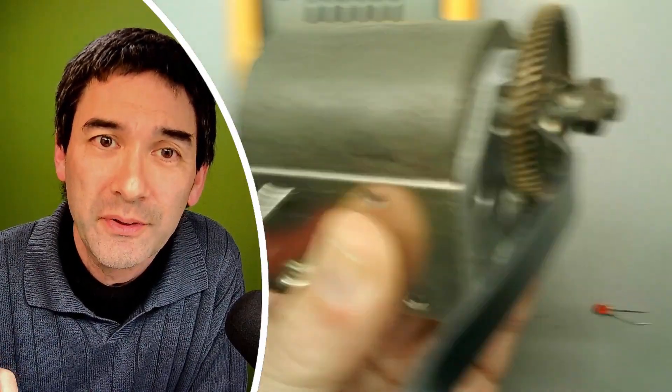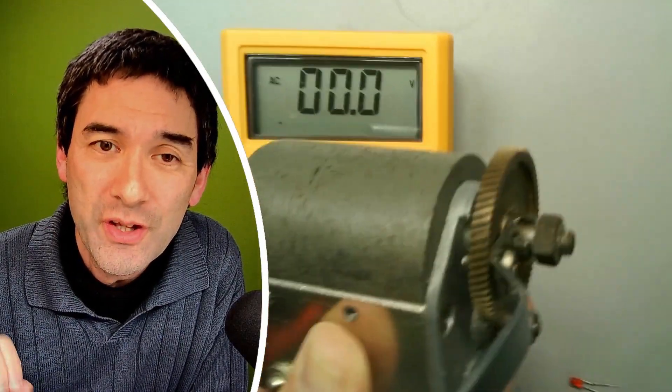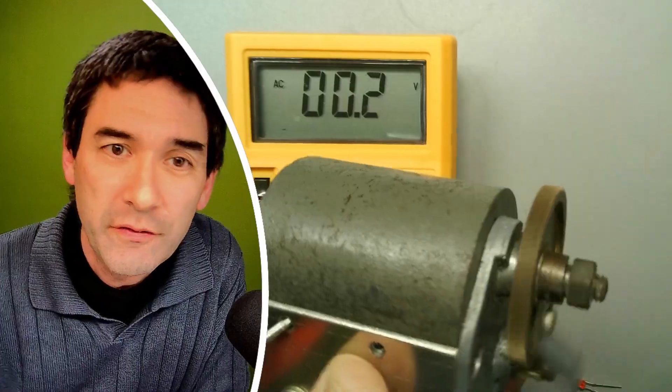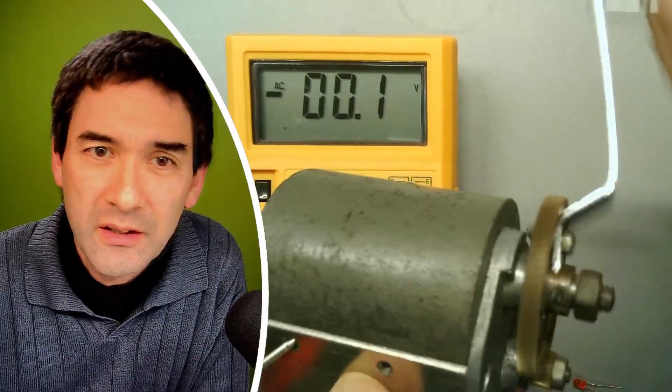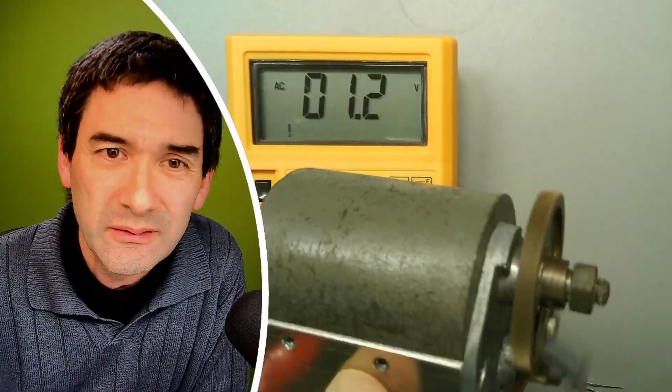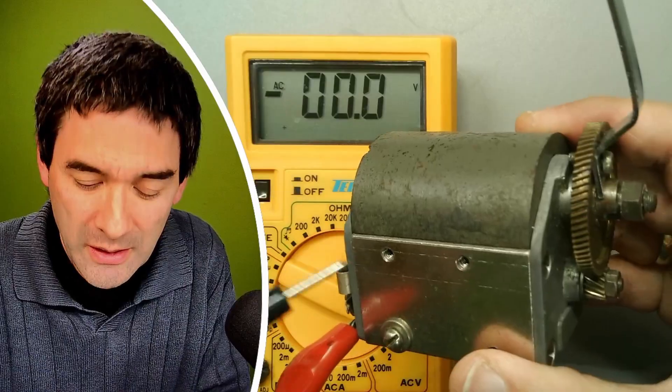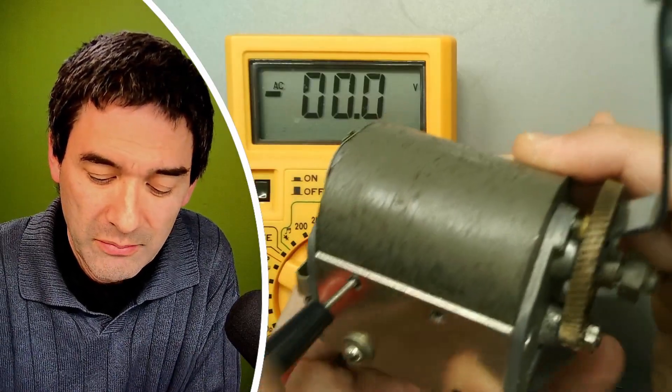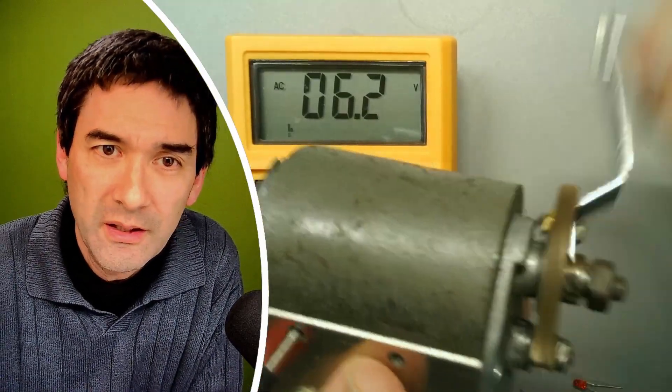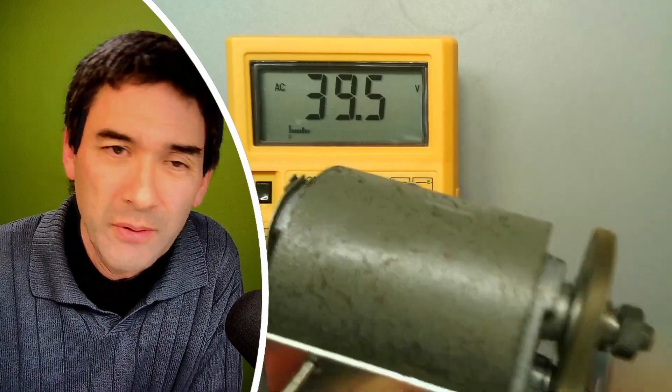But the strange thing is, now I bumped my camera, the strange thing is it does not generate any voltage if I rotate the other way, for whatever reason. Oh no, I dropped this. So for whatever reason, it only works properly when I rotate this forward. I don't know why.